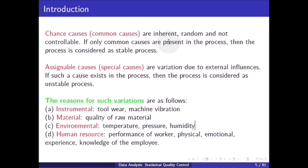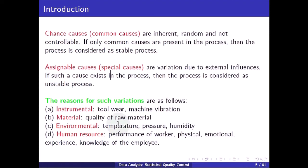If only common causes are present in the process, then the process is considered a stable process. Assignable or special causes are variations due to external influences; if such causes exist, the process is considered unstable. The reasons for such variations include: instrumental factors such as tool wear and machine vibration; material factors such as quality of raw material; environmental factors such as temperature, pressure, and humidity; and human resources factors such as performance, physical condition, emotional state, experience, and knowledge of employees.